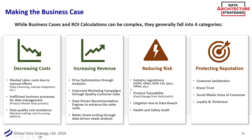Think of these four categories — you probably have something in all four. I use this slide and say: in my organization, what is my strategy going to do to help decrease costs, increase revenue, reduce risk, or protect reputation? Generally, I think things fall into these four buckets.